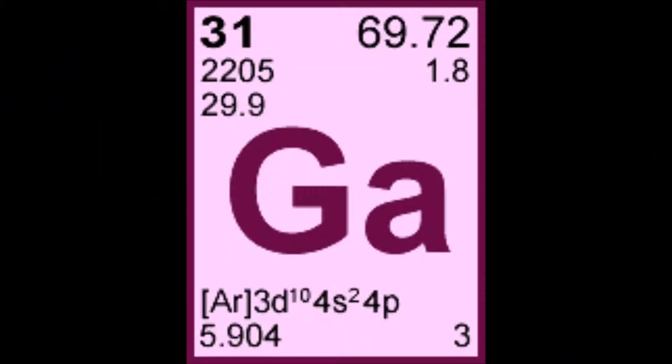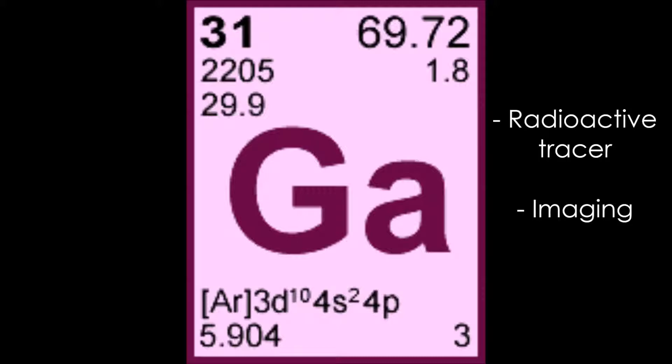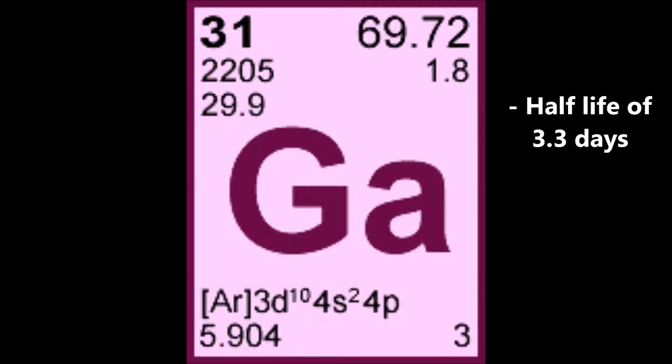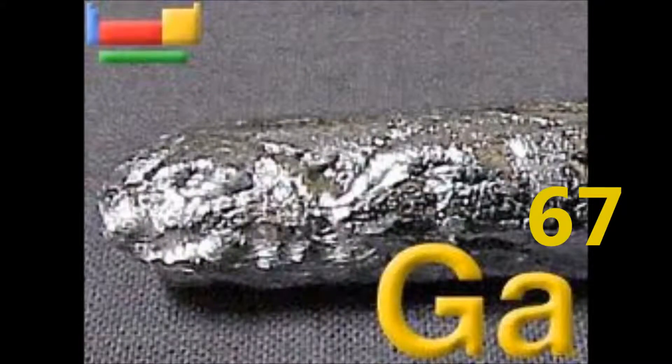The radioisotope gallium-67 is a medical isotope used as a radioactive tracer to image tumours and inflammatory infections, and has a half-life of 3.3 days. Gallium-67 has been used for imaging a variety of tumours since 1969 and is referred to as gallium scans.